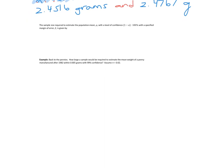So the last thing we're going to do is we're going to figure out the sample size if we have a certain level of confidence we want to obtain and a certain margin of error. Okay. And then we can rearrange our confidence interval to get our formula. So let's look at an example. We want to know how large a sample would be required to estimate the mean weight of a penny manufactured after 1982 within 0.005 grams with 99% confidence.